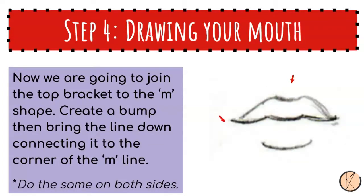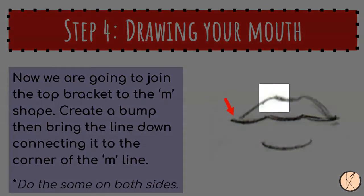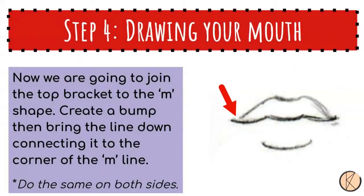Now we are going to join the top bracket to the M shape line. Create a bump then bring the line down connecting it to the corner of the M line. Do the same on the other side.